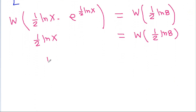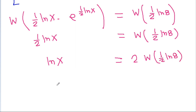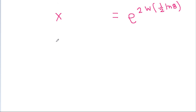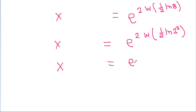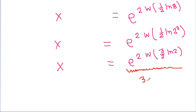So ln x is equal to 2 times W of 1 by 2 ln 8, which gives us x equal to e power 2 times W of 1 by 2 ln 8. Since 8 is 2 cubed, this becomes e power 2 times W of 3 by 2 ln 2. The approximate value of e power 2 times W of 3 by 2 ln 2 is 3.198, so x is approximately equal to 3.198.